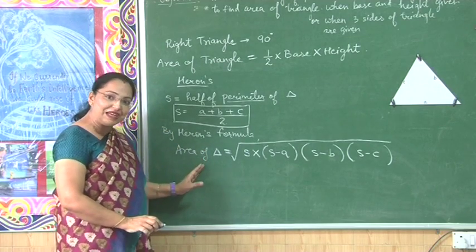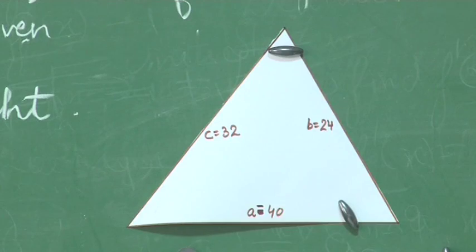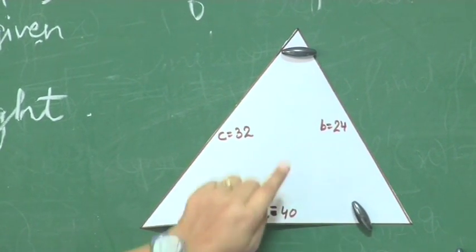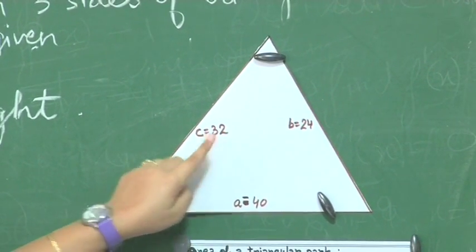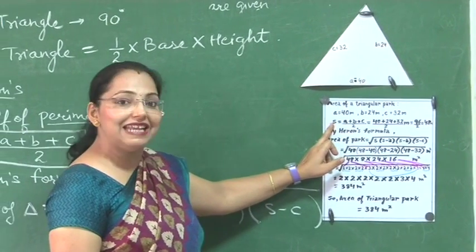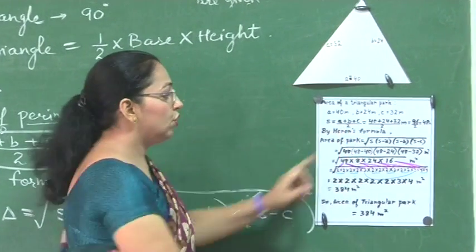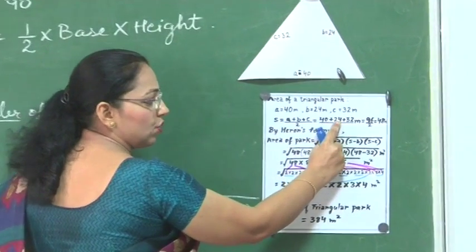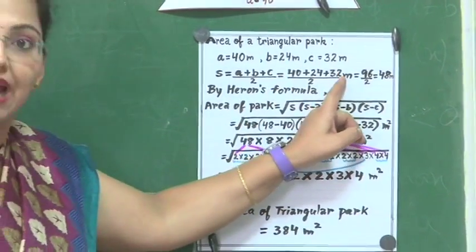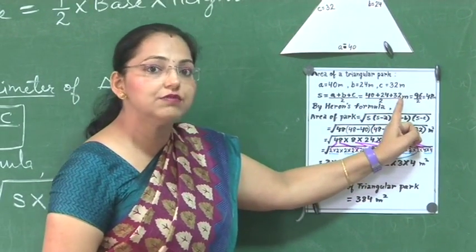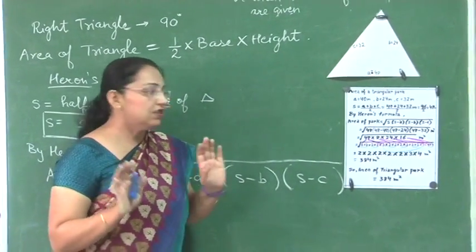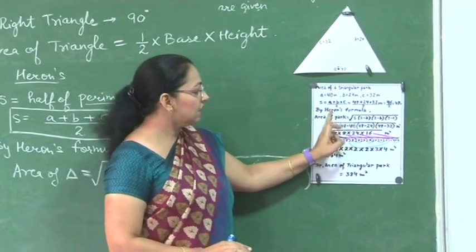Suppose I have a triangle with sides A = 40 units, B = 24 units, and C = 32 units. The area of this triangular park can be easily calculated by Heron's formula. First, we find S = (A + B + C) / 2 = (40 + 24 + 32) / 2. Remember BODMAS here — first we add, then take half. Adding all terms in the numerator gives 96, divided by 2 gives S = 48.